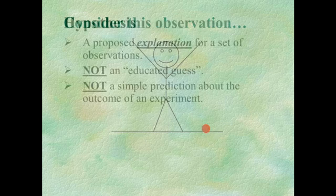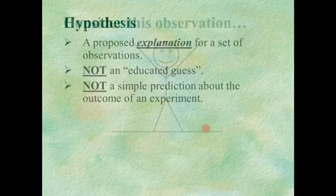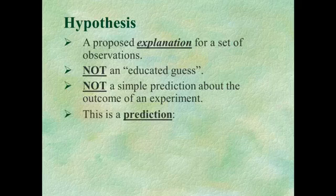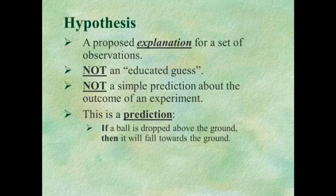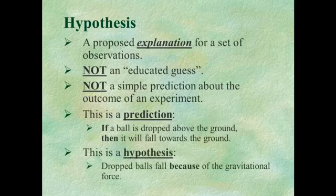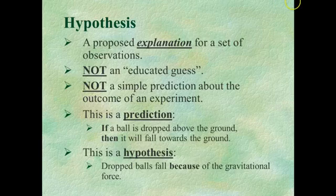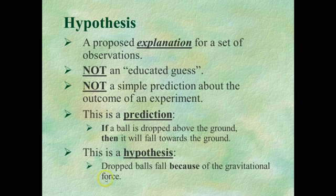Well, a hypothesis would not be a simple prediction. A prediction would be something like, if I drop the ball, it's going to fall to the ground. Now, that's a prediction, but that doesn't give us any explanation for why the ball is falling. A hypothesis is: when I release a ball, it falls to the ground because of the gravitational force. This 'because' statement is what makes it a hypothesis — not the if-and-then. This is just simply a prediction, but the hypothesis has some explanation that we can test.